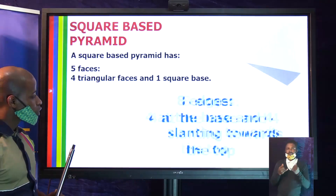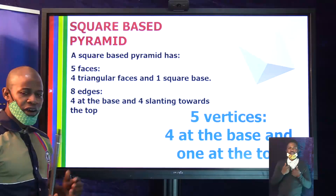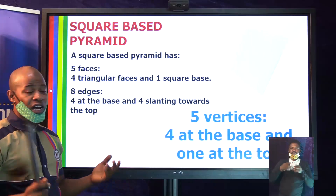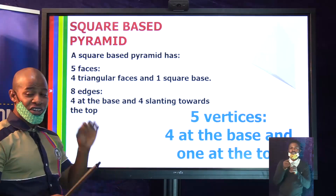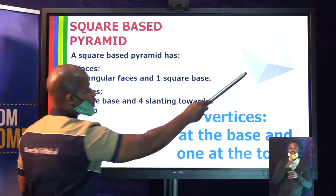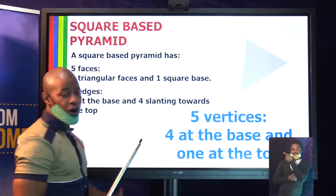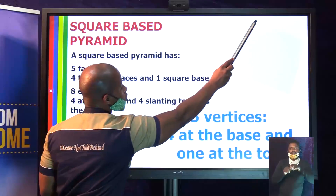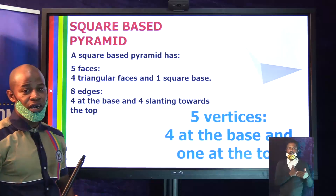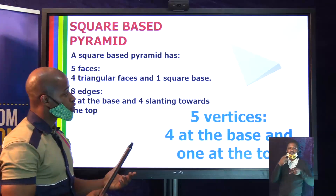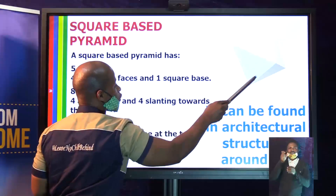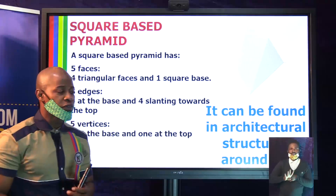It has five vertices. Don't forget that the vertices are the sharp points, and they are easy to count. There is just one at the top — the vertex. And there are four at the base: one, two, three, four. From the front view you can see all five: one, two, three, four at the base, and the one at the top makes five.